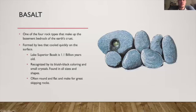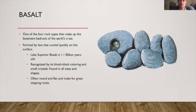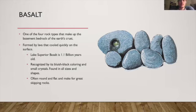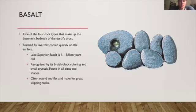Next, we have basalt — one of the four rock types that make up the basement bedrock of the Earth's crust. It's formed by lava that cooled really quickly on the surface, whereas rhyolite cooled slowly underground. This lava hit the cooler air and then formed. Lake Superior basalt is 1.1 billion — with a B — yes, billion years old. It's recognized by its bluish-black coloring and small crystals found in tons of different shapes and sizes. Typically, your best skipping rocks are going to be basalt — those blue, dark gray, sometimes black, nice-shaped rounded rocks are likely basalt.